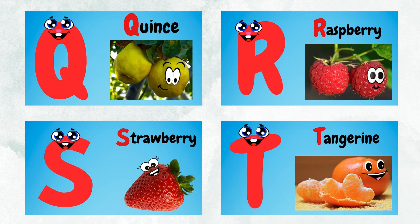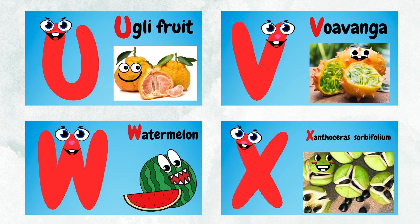R for raspberries, S for strawberry, T for tangerine, U for ugly fruit.